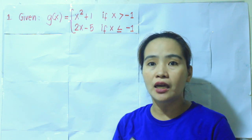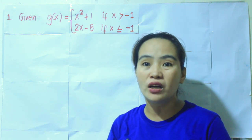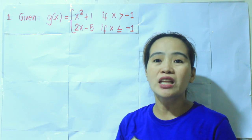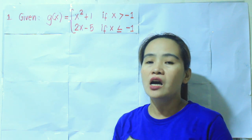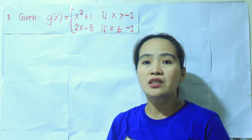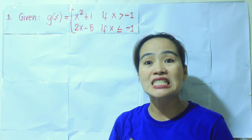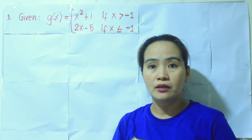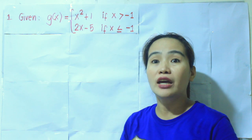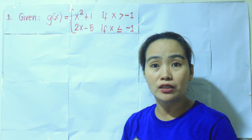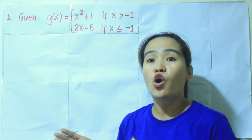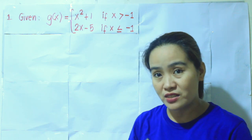So meaning negative 1 is included here. And the integers less than negative 1 are negative 2, negative 3, negative 4, and all the negatives.